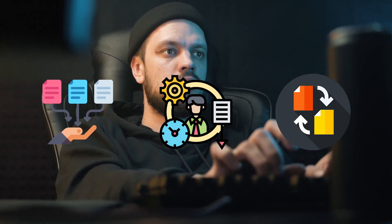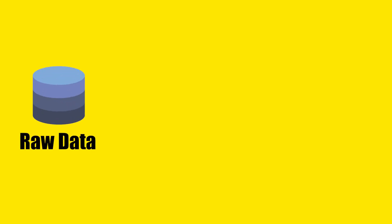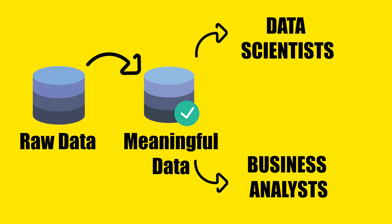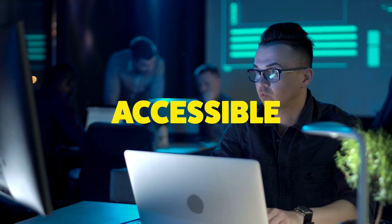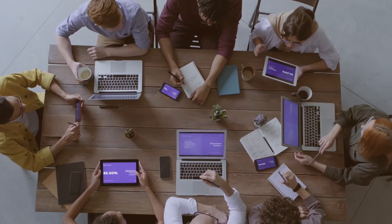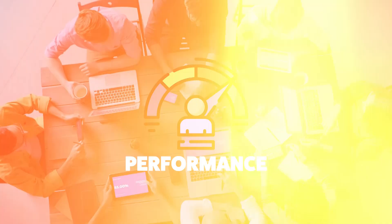Let's take a quick look at what basically is a data engineering role and what data engineers do. Data engineers are responsible for building systems that collect, manage and convert raw data into usable information for data scientists and business analysts to interpret. Their ultimate goal is to make data accessible so that organizations can use it to evaluate and optimize their performance.